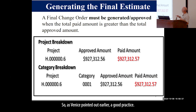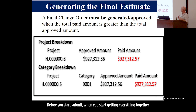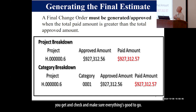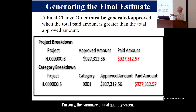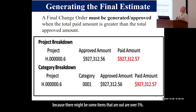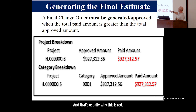A good practice before you submit your paperwork is to check the Summary of Final Quantities screen. It'll tell you if you need to do another final change order because there might be some items that are out or over 5%, and that's usually why this is red.